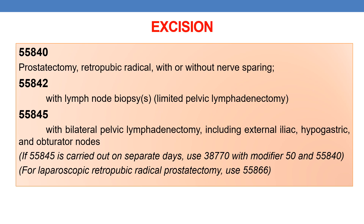Next is CPT 55845 — prostatectomy with bilateral pelvic lymphadenectomy including external iliac, hypogastric, and obturator nodes. Since it is a bilateral procedure, if 55845 is carried out on separate days, use 38770 with modifier 50 and 55840. For laparoscopic retropubic radical prostatectomy, the CPT is 55866.